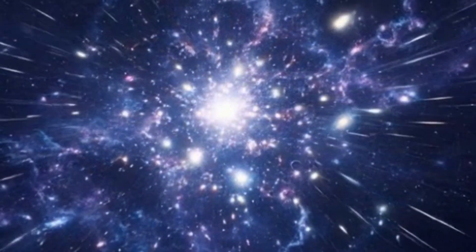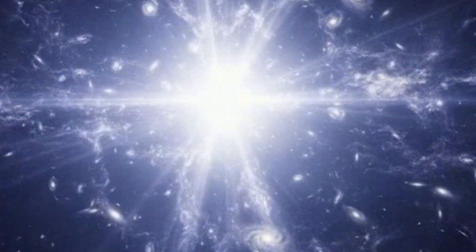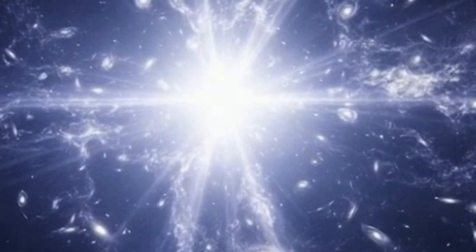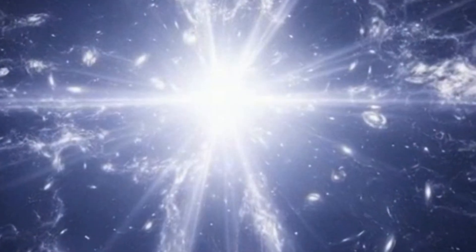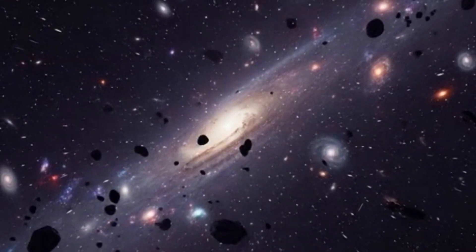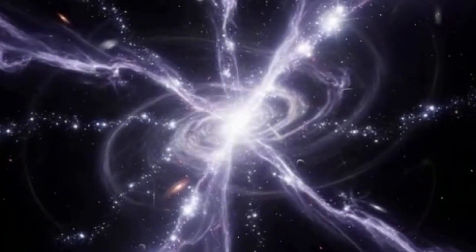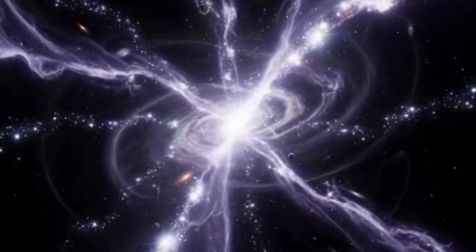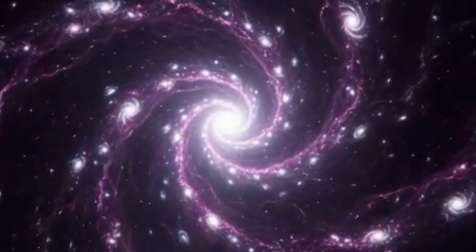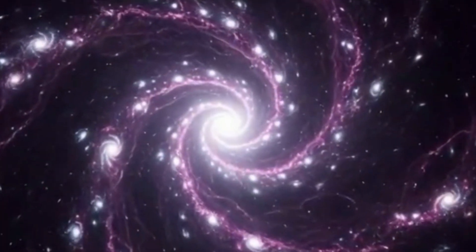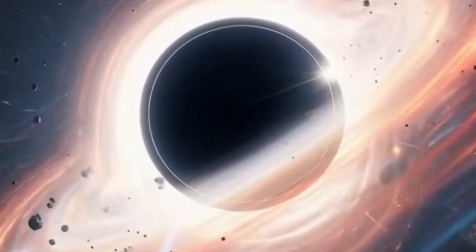Common sense might tell us that light from galaxies moving away faster than light itself should be impossible to see, forever lost beyond reach. But the universe, as always, defies common sense. Astonishingly, we can still observe galaxies that exist beyond the Hubble sphere, the region where cosmic expansion carries galaxies away at the speed of light. How? Because the Hubble sphere itself is not fixed. It's expanding. As the universe accelerates, this invisible boundary grows, drawing more distant galaxies into our view, even those that are receding faster than light.